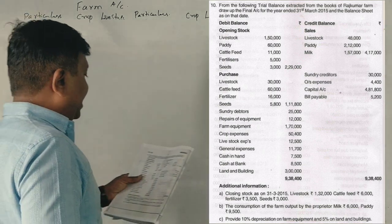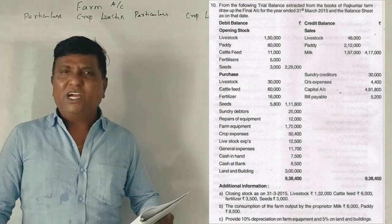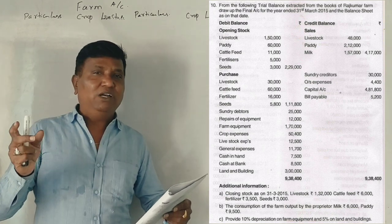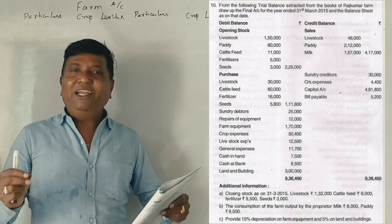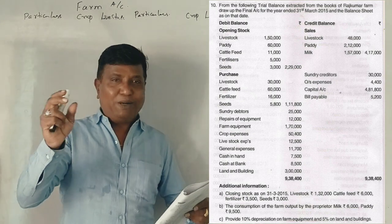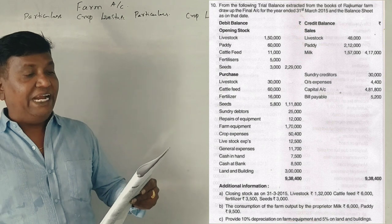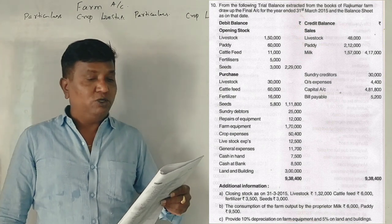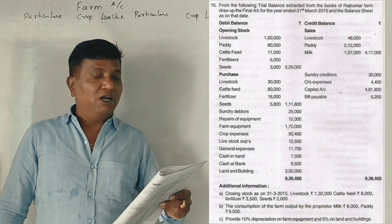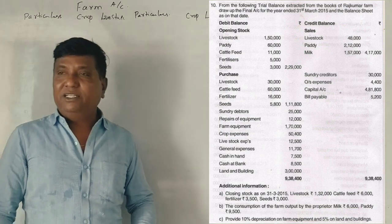Guys, farm accounting 2016 question paper. From the following trial balance extracted from the books of Muxav Rajkumar, draw up final accounts for the year ending March 2015 and balance sheet as on that date.